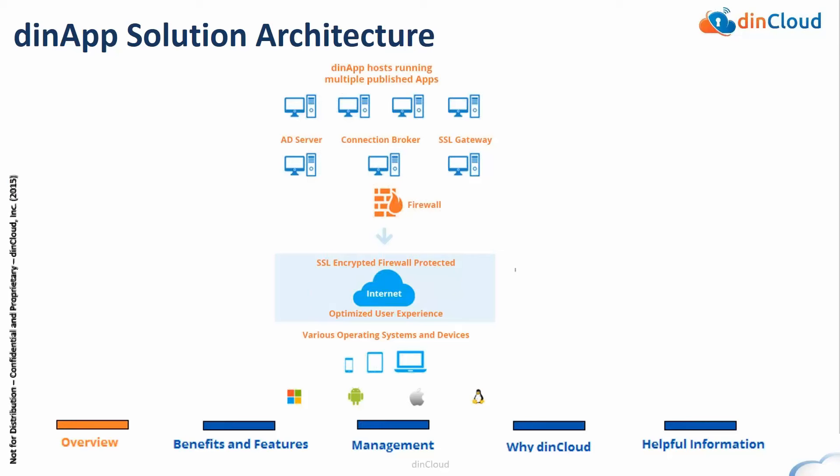Everything is encrypted in transit and encrypted at rest — one of our unique differentiators. It can be accessed from the internet, or we can also have private connections. Any device, anywhere, anytime access to applications — whether that's a Windows endpoint, a Mac OS endpoint, a Linux endpoint, even Chrome OS, Android, and iOS tablet devices. That's a little bit about the architecture.